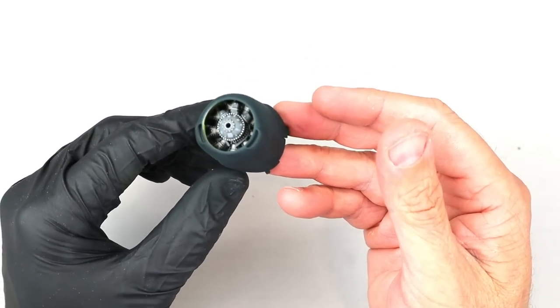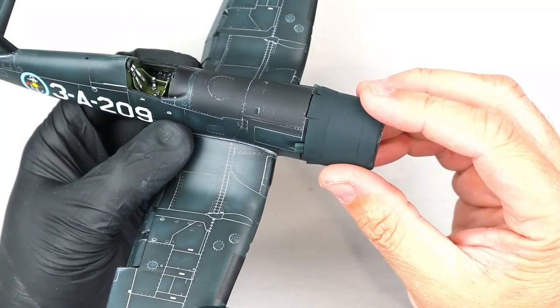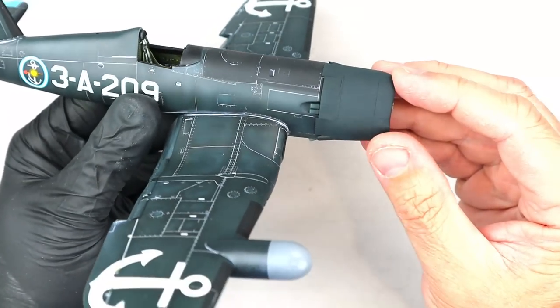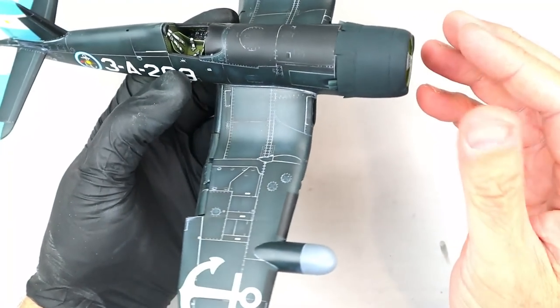With the engine and cowl assembly complete, it could then be installed onto the fuselage. I masked and airbrushed the anti-glare panel and used the same techniques to weather the cowling to match the rest of the airframe.